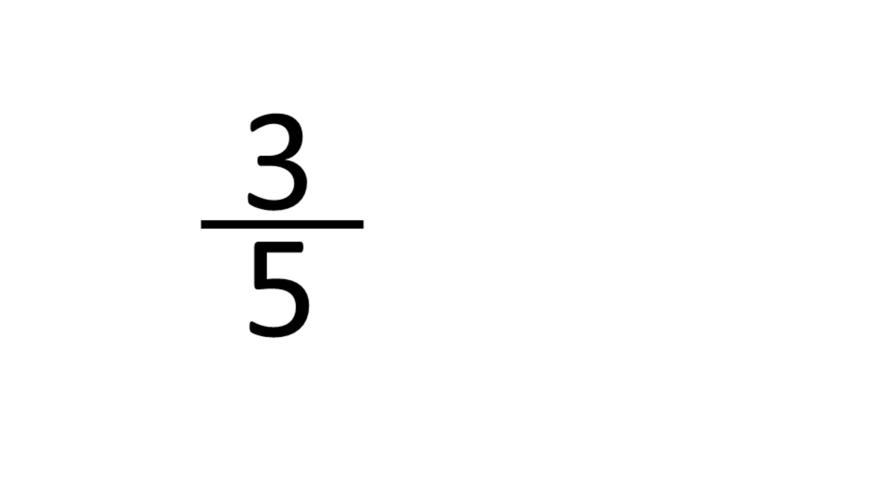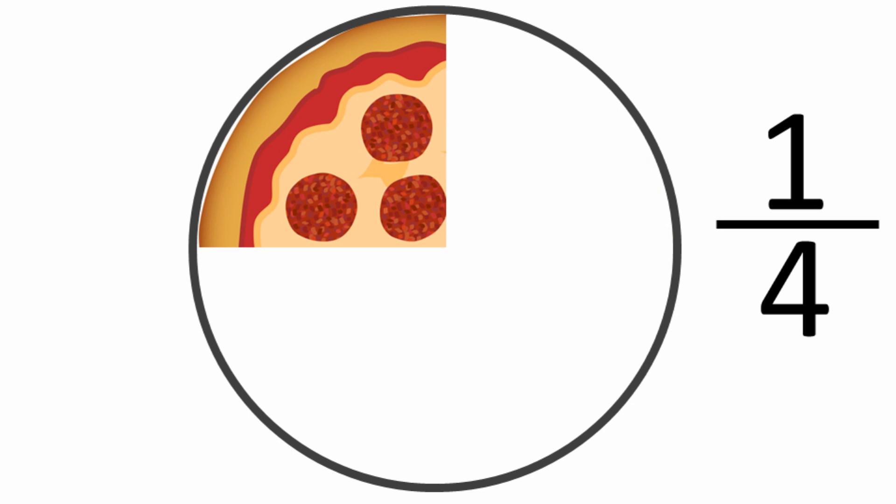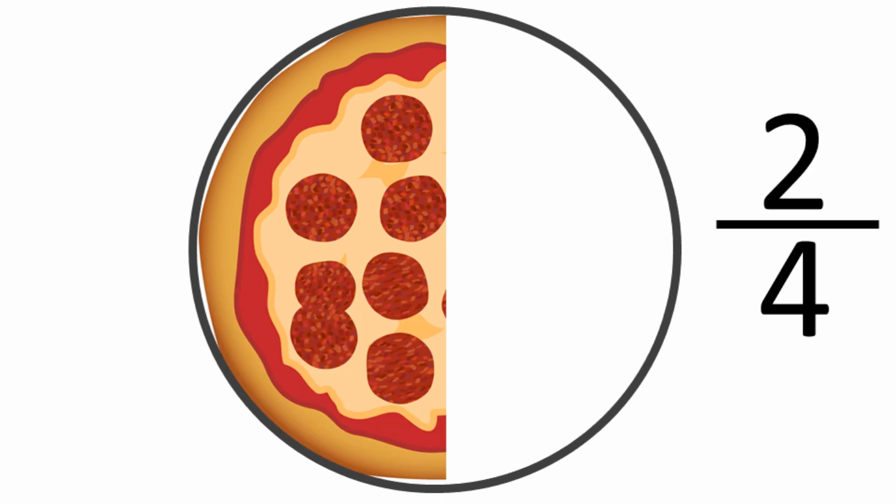Now if your child struggles with this concept, you might like to use pizza to help explain. Here we have a quarter, or a fourth, of a pizza. Now we have two quarters of a pizza, but it's clear just from looking at it that two quarters of a pizza is the same as half a pizza.